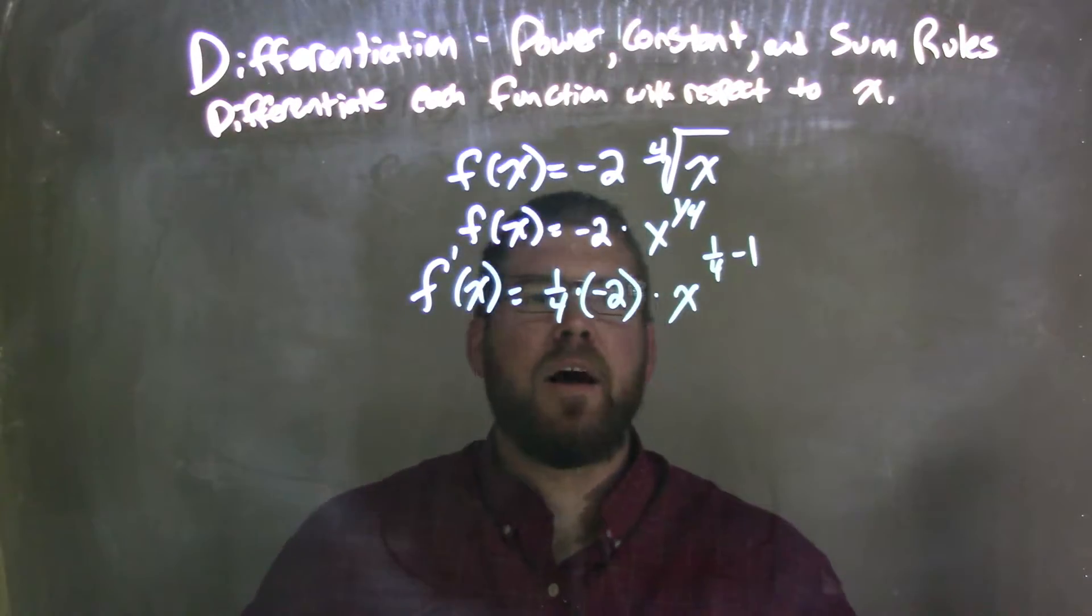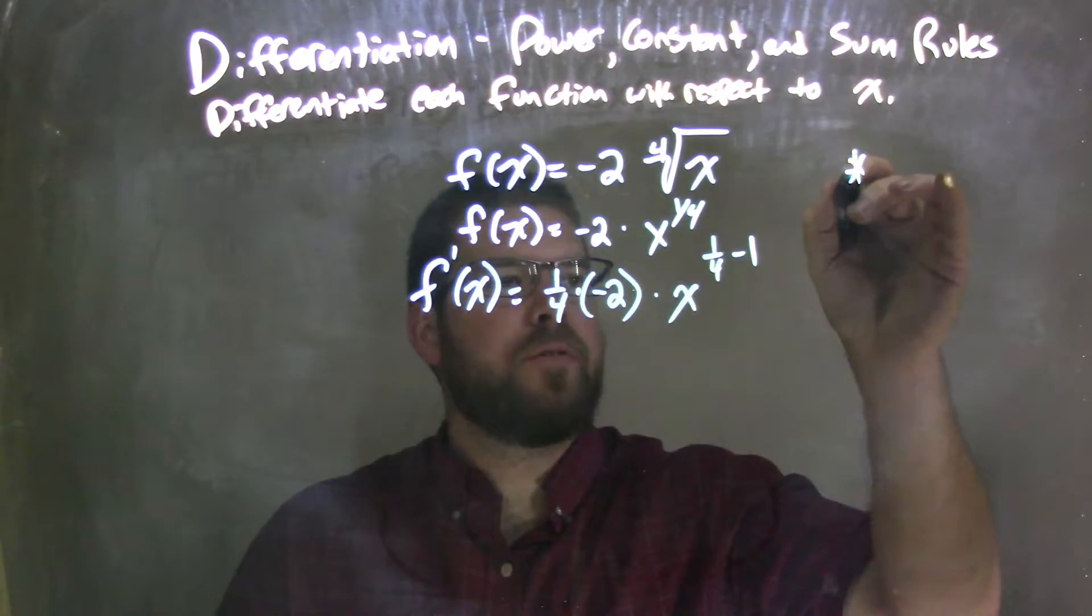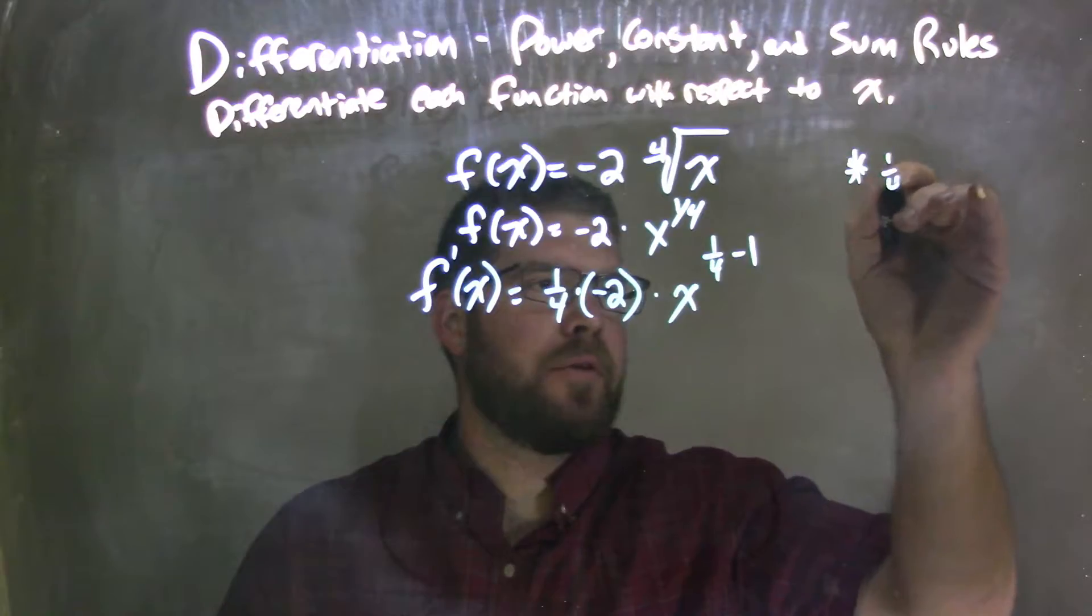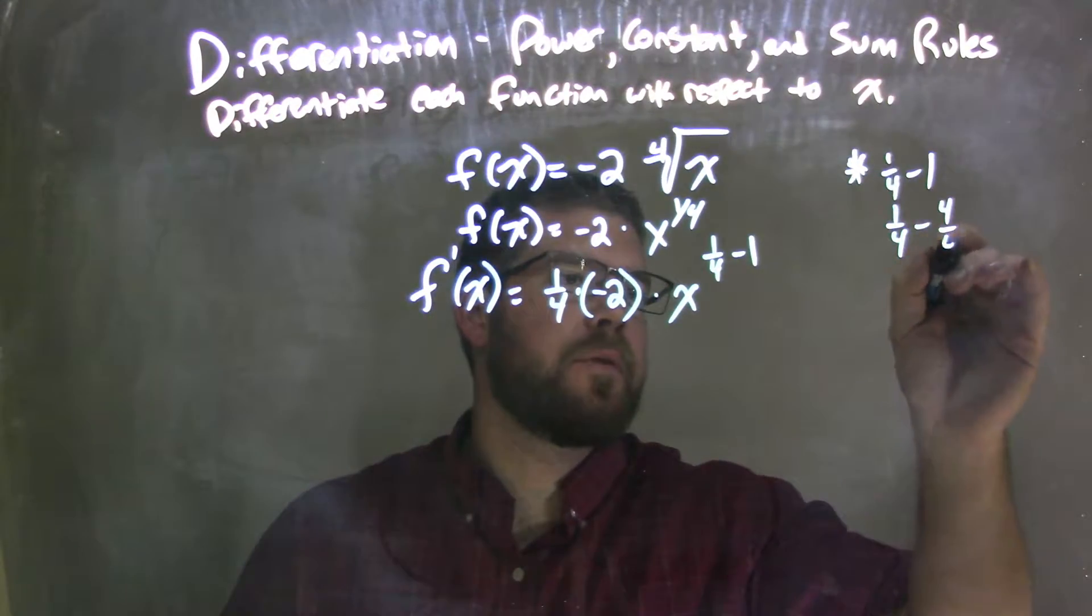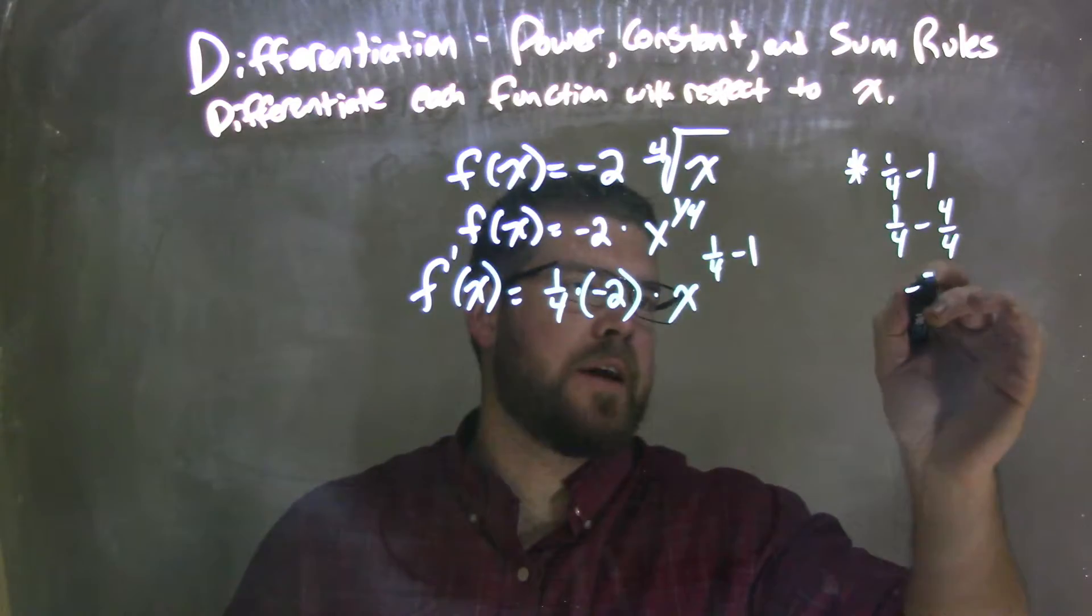If you need a little note here, one-fourth minus 1, you can, one-fourth minus 1 is the same thing as one-fourth minus four-fourths. And one-fourth minus four-fourths is negative three-fourths.